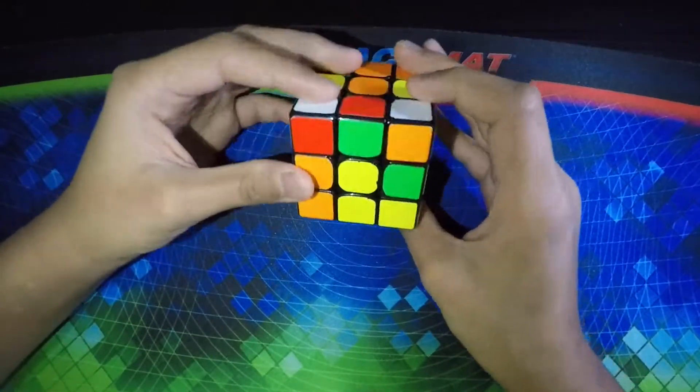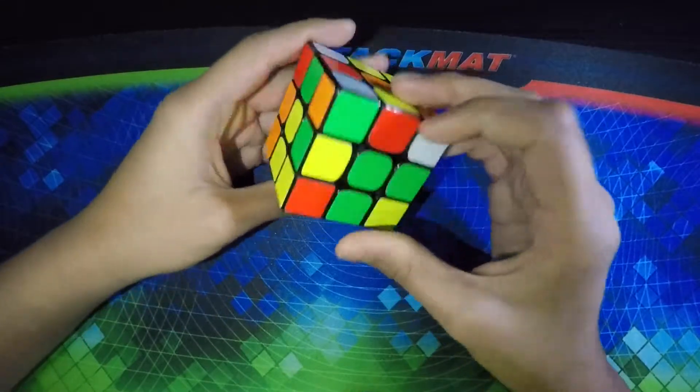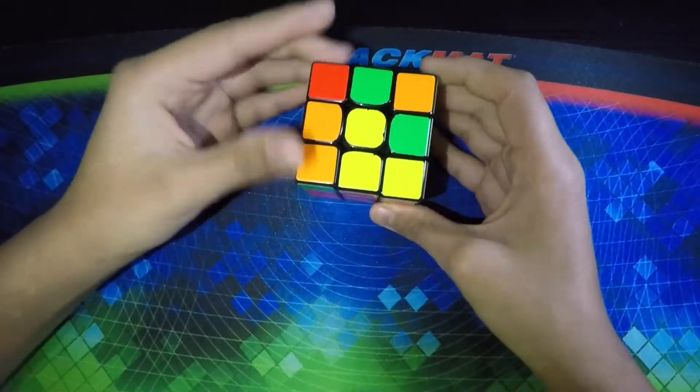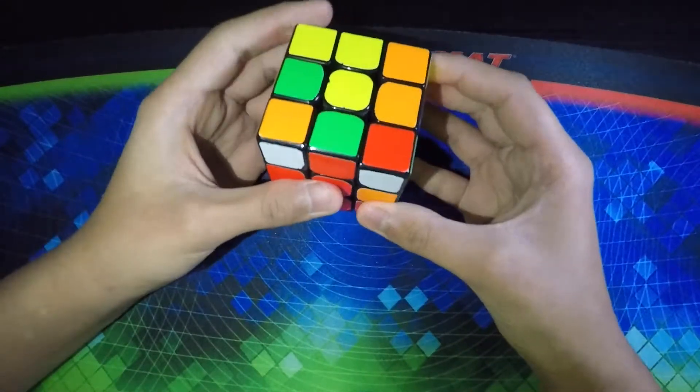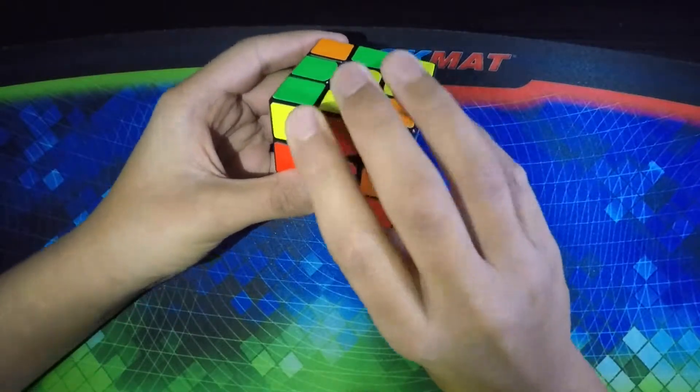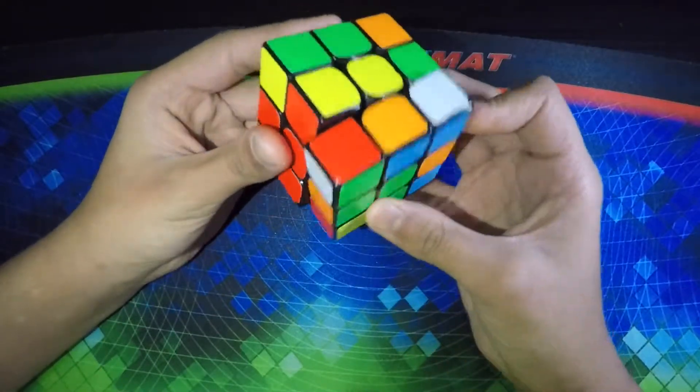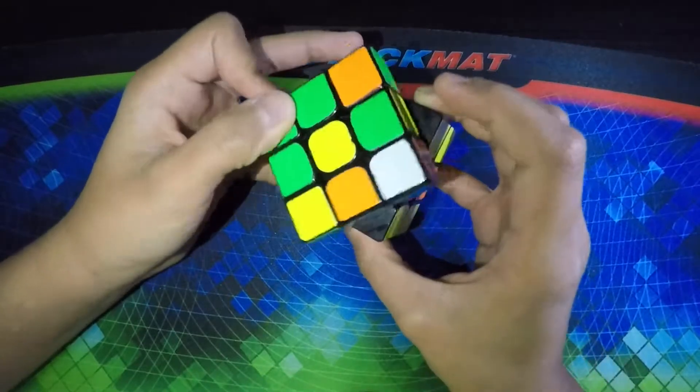And then the second pair I saw was this one, which is kind of weird, but I did. So I did a U2, I hid the corner, and then I moved the edge over. I rotated, and then I inserted it.